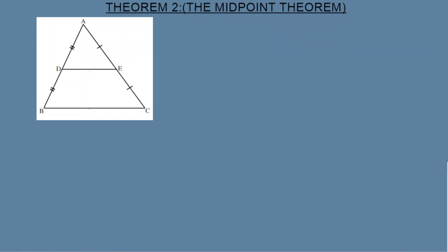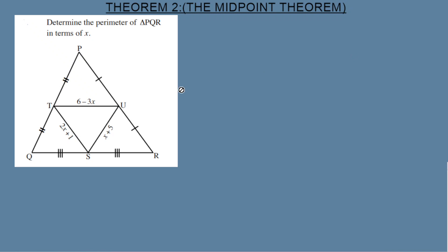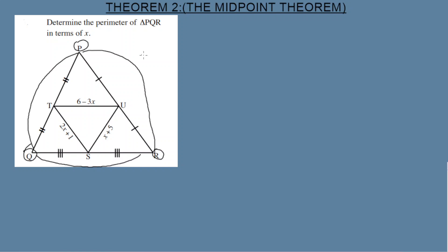Let's look at an example to demonstrate Theorem Two. Determine the perimeter of triangle PQR. To calculate the perimeter I need the length of each side: this length plus this length plus this length. Using the Midpoint Theorem, this length equals this length, this length equals this length, so lines TU, US, and TS divide these sides equally.